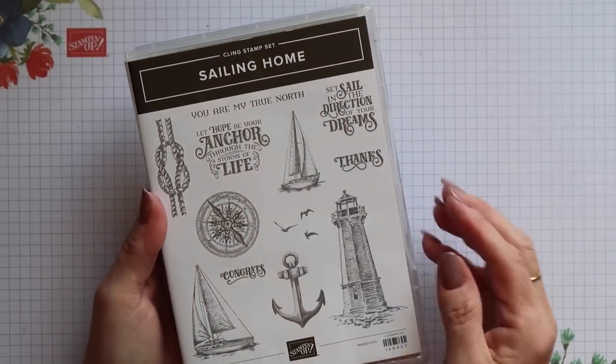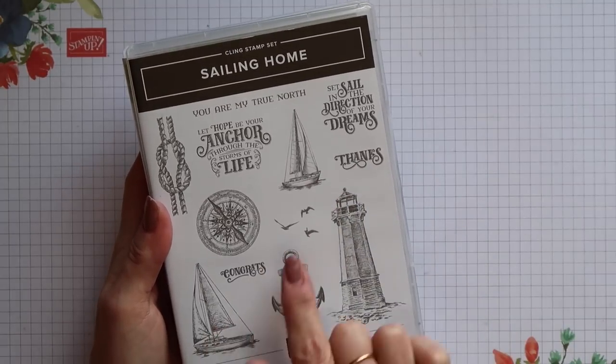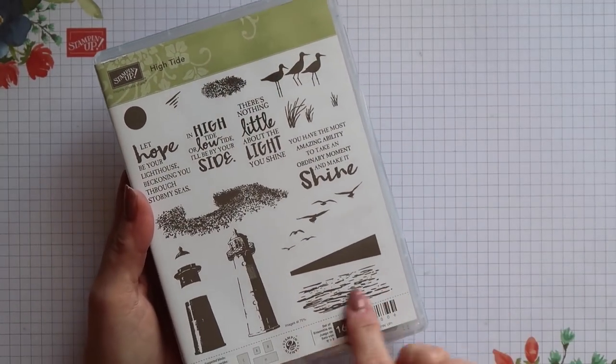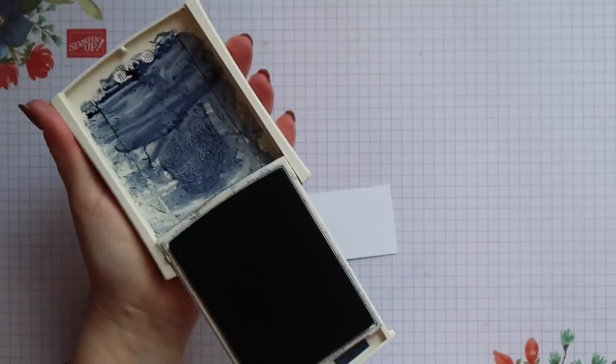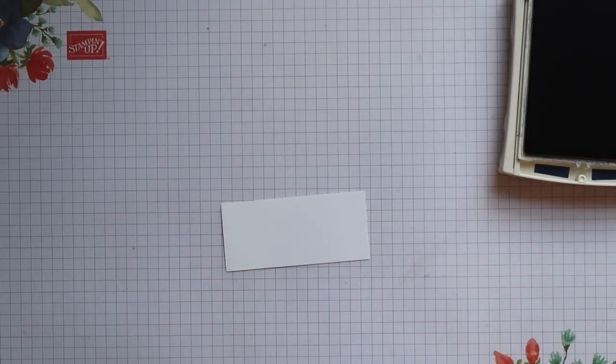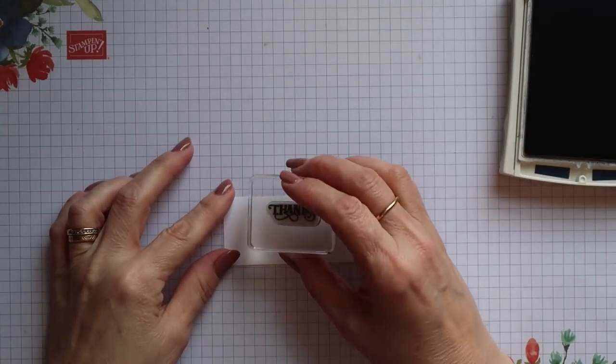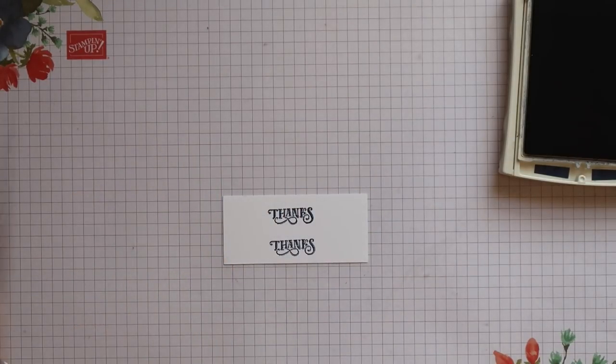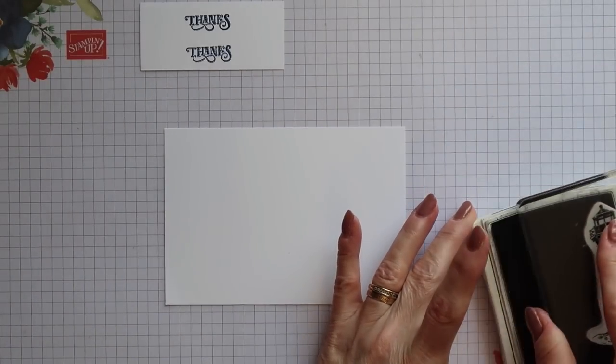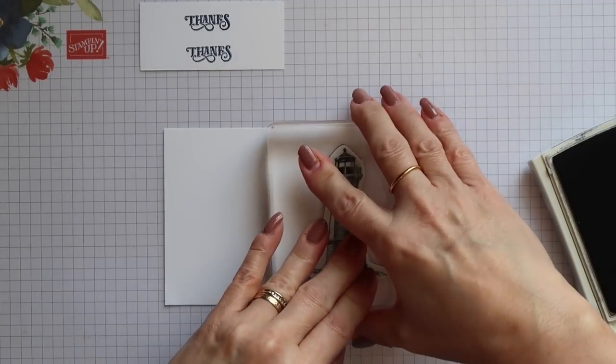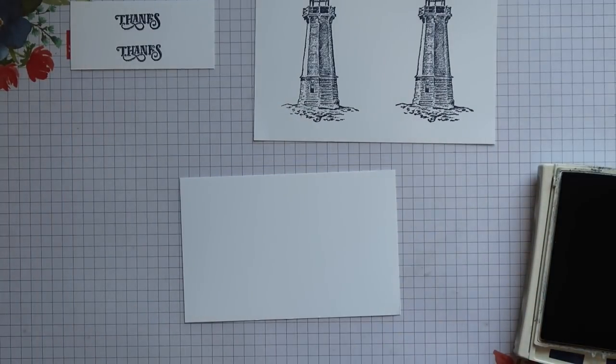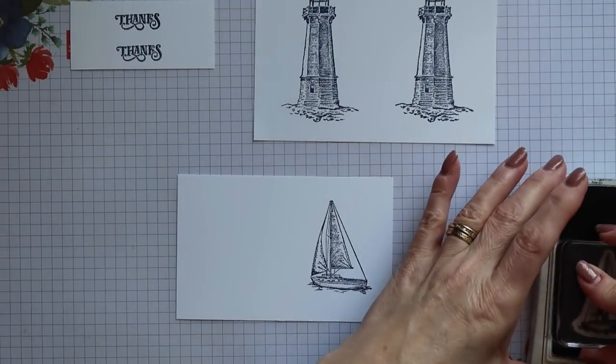Most of the images I'm using for the stamping come from the Sailing Home stamp set. I'm using the thanks sentiment, the two boats, the birds, and the lighthouse. I'm also going to use the sea image from the High Tide stamp set. I'm going to show you how I created each of the designs that I used in my set. I'll need two sentiments, one for each of the cards. I'm using Night of Navy ink and I've got a scrap of Whisper White card. I'm going to stamp two lighthouses, one for the top of the box and one for one of the cards. I also need one of the larger boats and two of the smaller boats.